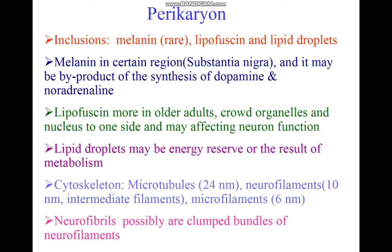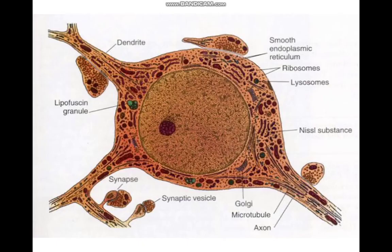The cytoskeleton of the perikaryon is made up of microtubules (24 nanometers), neurofilaments (10 nanometers in diameter), and intermediate filaments. Neurofibrils are possibly clumped bundles of neurofilaments.